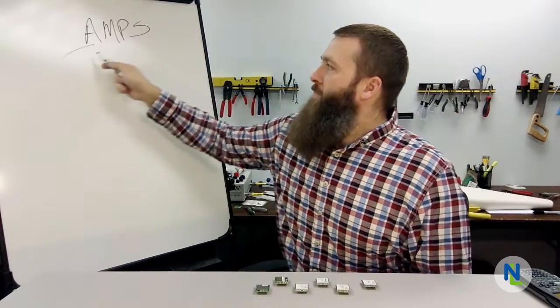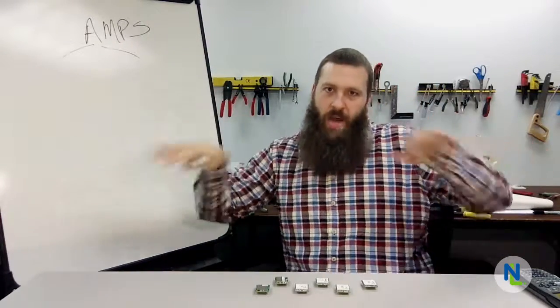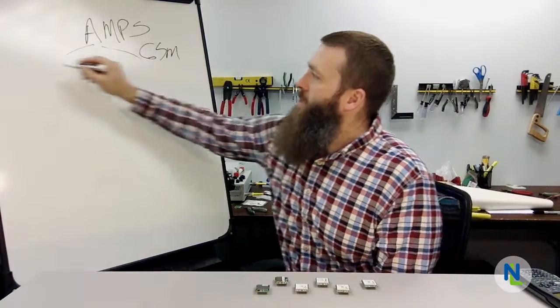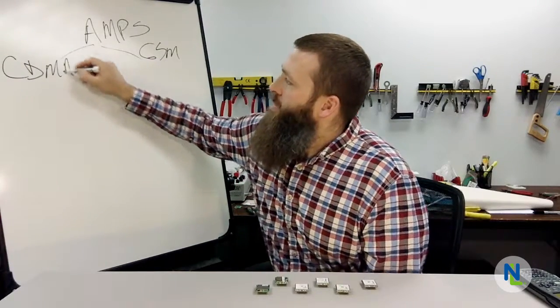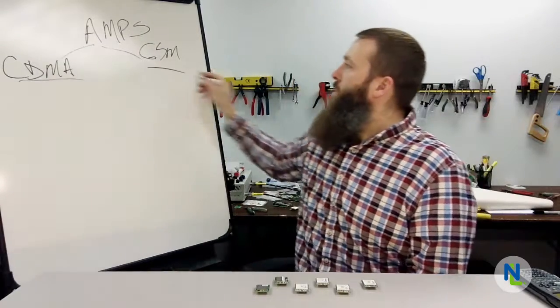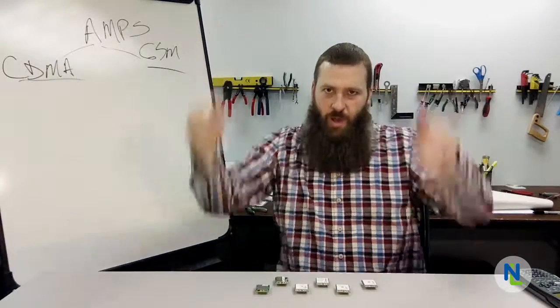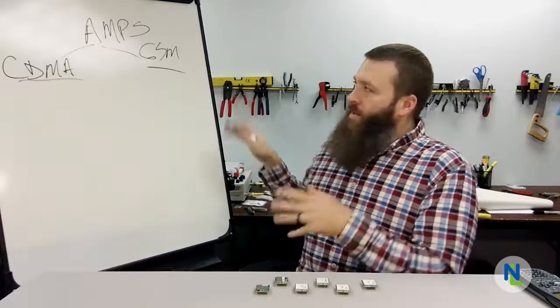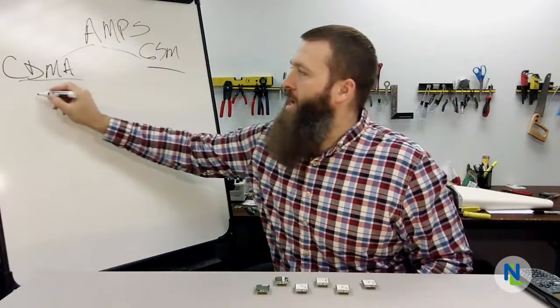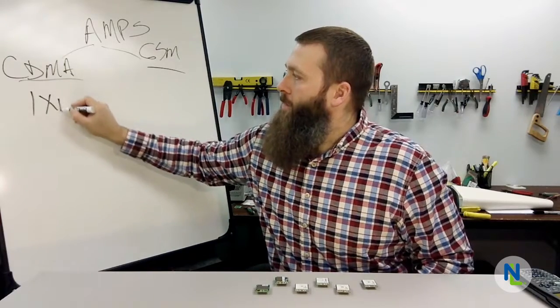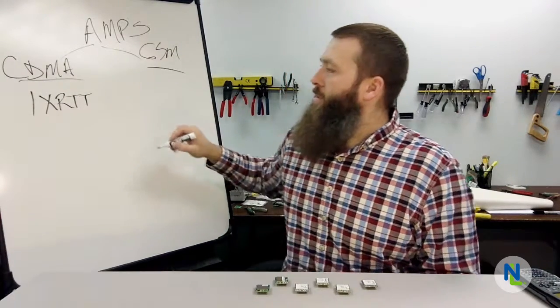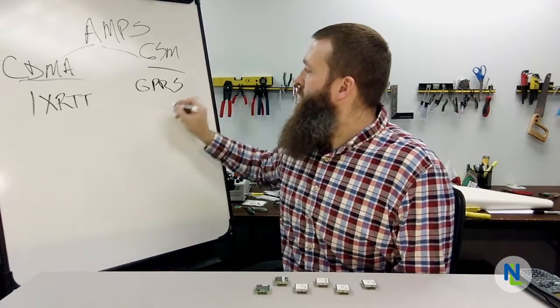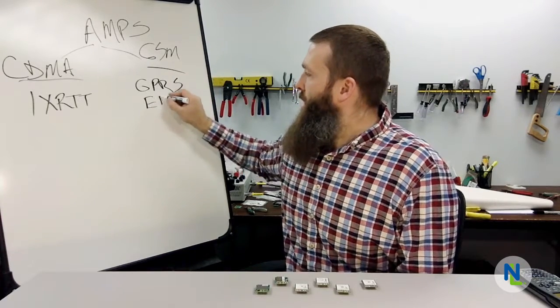From there, things separated into two separate paths, separate families if you will. There was the GSM side and the CDMA side. These were basically two different diverging technologies that came out. On the CDMA side, some of the names you'll remember are 1XRTT, that was basically known as 2G. On the GSM side, you had GPRS and then that was followed very quickly by Edge.